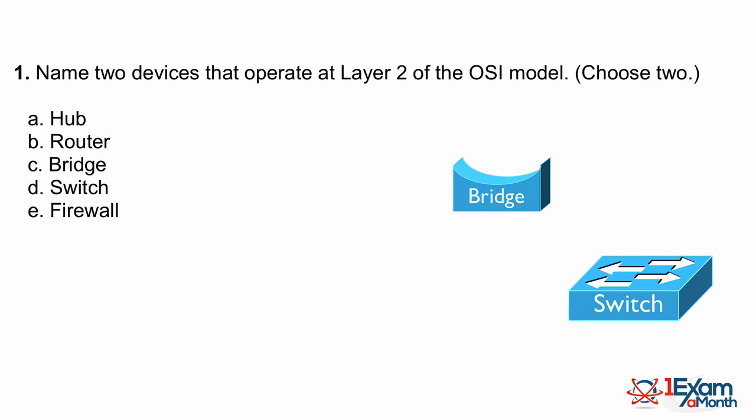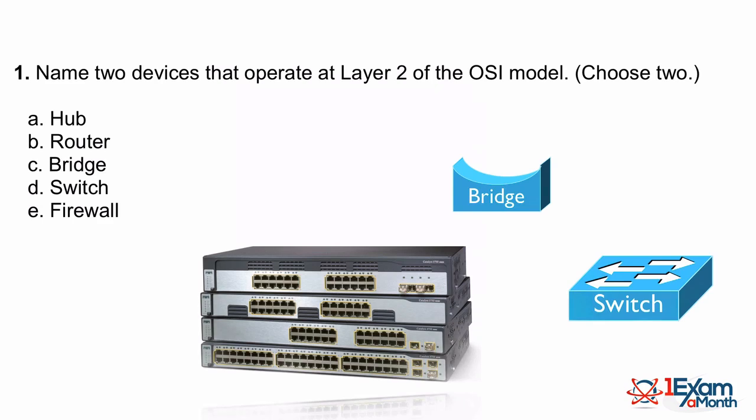Like a bridge, a switch makes forwarding decisions based on destination MAC addresses, but it does so in hardware using dedicated circuits called ASICs — Application-Specific Integrated Circuits. These allow Ethernet switches to very quickly and efficiently look at a destination MAC address and forward a frame out of the appropriate port. Here we see some Cisco Catalyst 3750 series switches. In summary, bridges operated at layer 2 in the 1980s and were largely replaced in the 1990s by Ethernet switches — so the answer is C: bridge and D: switch.